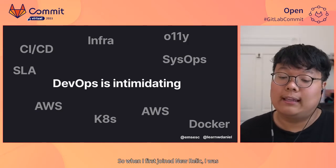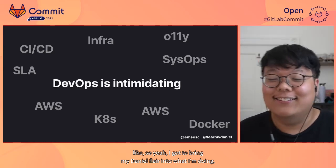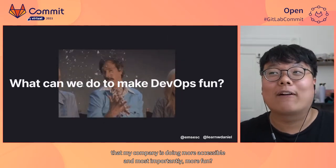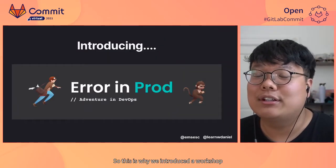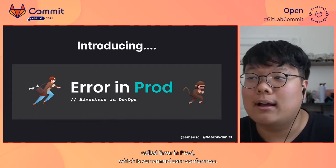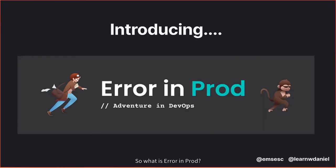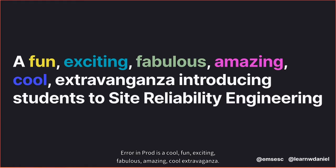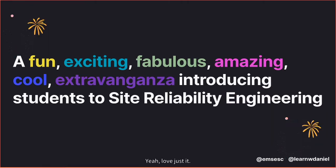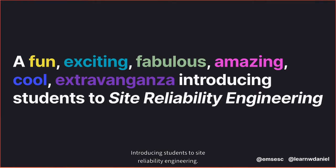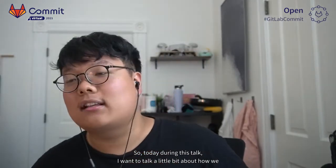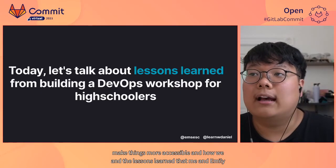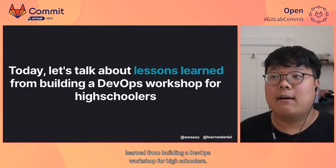So when I first joined New Relic, I thought: how do I bring my Daniel flair into what I'm doing? How do I make the things that my company is doing more accessible and, most importantly, more fun? This is why we introduced a workshop called Air and Prod at FutureStack, which is our annual user conference. Air and Prod is a cool, fun, exciting, fabulous, amazing extravaganza introducing students to Site Reliability Engineering. Today during this talk, I want to talk about how we make things more accessible and the lessons learned from building a DevOps workshop for high schoolers.